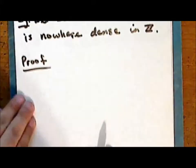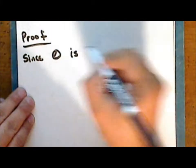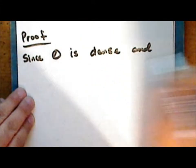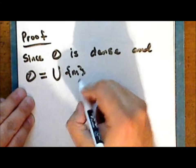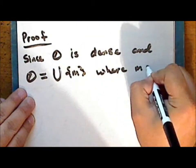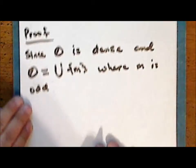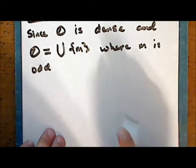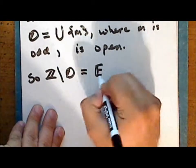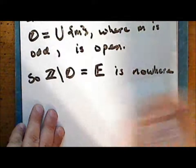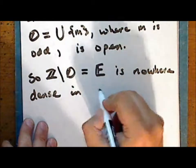Proof: Since the set of all odd integers is dense, and the set of all integers is the union of all singletons containing the element m where m is odd, it is an arbitrary union of open sets and hence is open. So the complement of the set of odd integers, which is the set of even integers, is nowhere dense in the digital line.